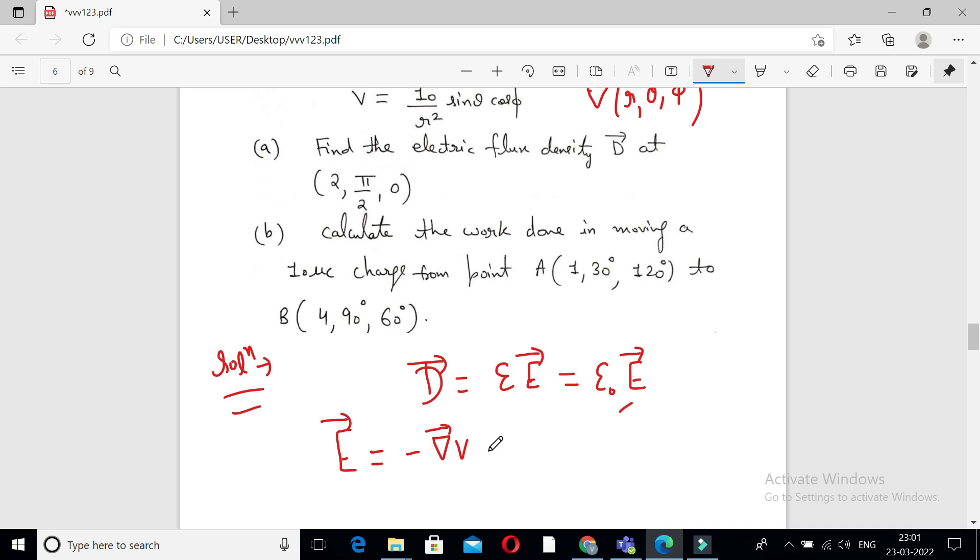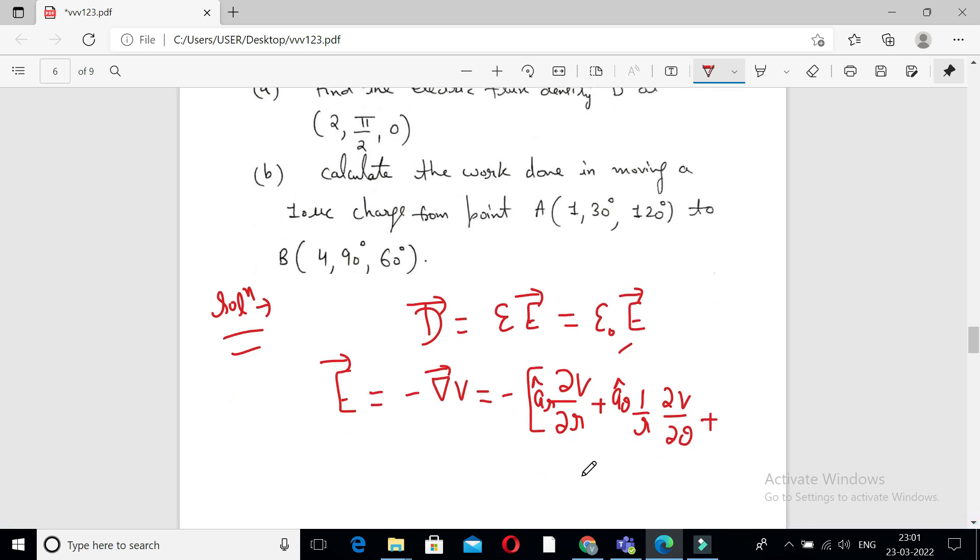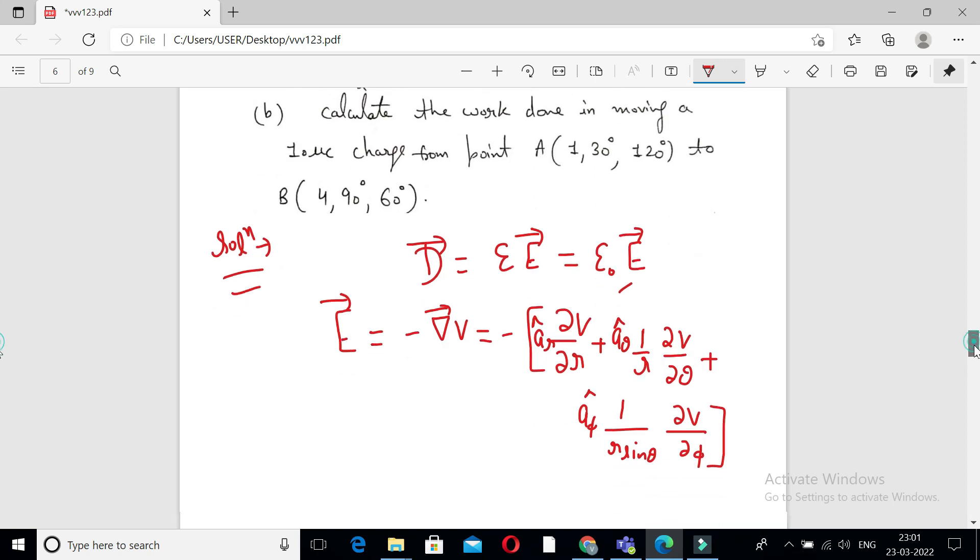Del upon del R, A R cap, and V is the function of R theta phi. So we can write plus A theta cap into 1 by R del V upon del theta plus A phi cap 1 upon R sine theta delta into del V upon del phi.